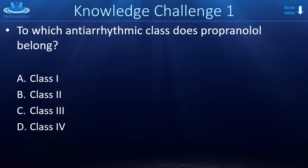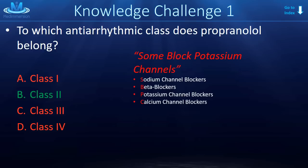Knowledge challenge number 1: to which antiarrhythmic class does propranolol belong? Propranolol is a class 2 antiarrhythmic. Remember the mnemonic 'some block potassium channels' — class 1 are sodium channel blockers, class 2 are beta blockers, class 3 are potassium channel blockers, and class 4 are calcium channel blockers. Also remember that most beta blockers end in -olol — so propranolol, esmolol, and metoprolol all end in -olol.